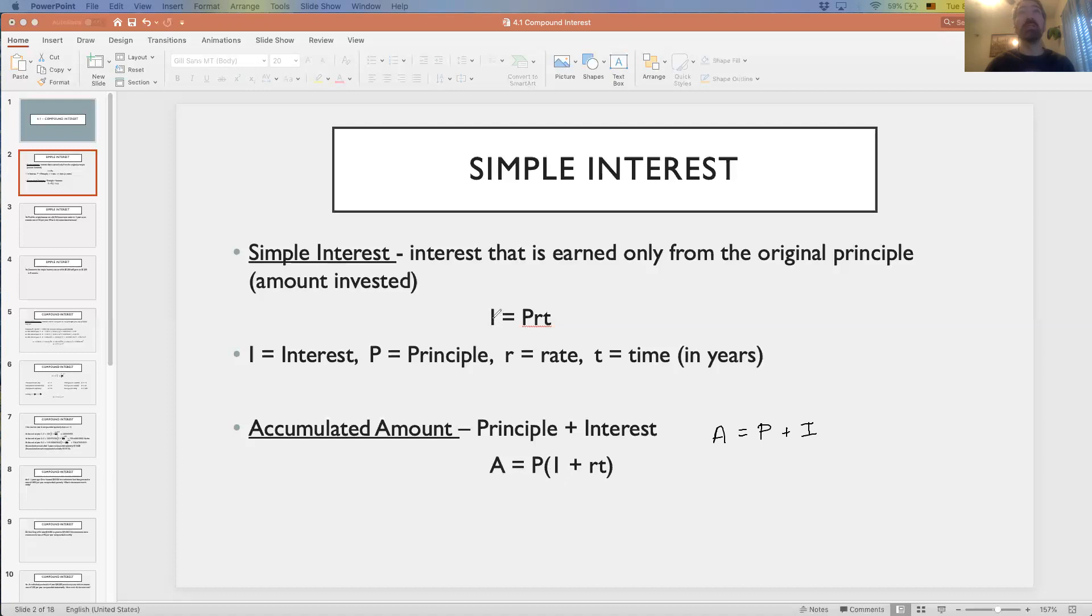I equals PRT, so I can replace that I with PRT. Then using a little bit of algebra, we can factor out a P out of both of these terms. We factor out by dividing each term by P, writing the P on the outside of the parentheses. Inside is what's left over after we divide. P divided by P is one, PRT divided by P is RT.